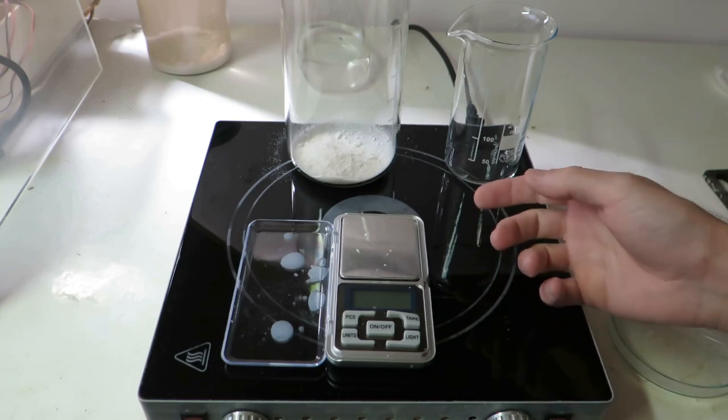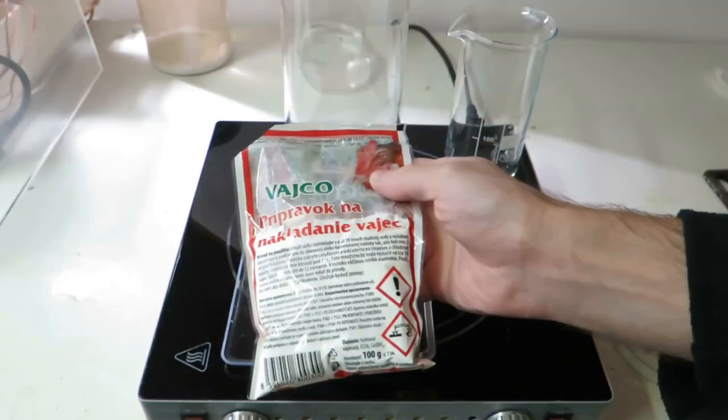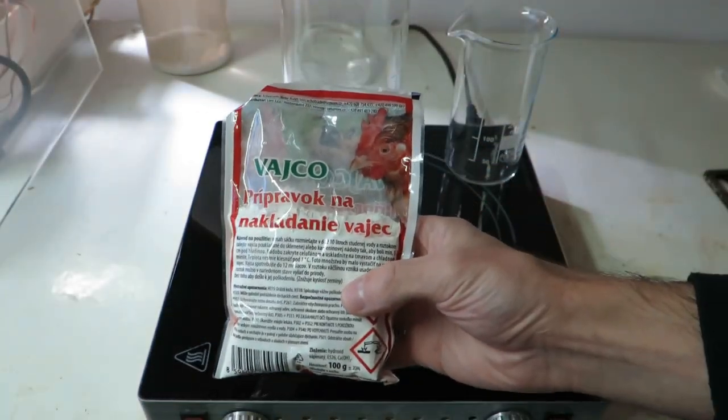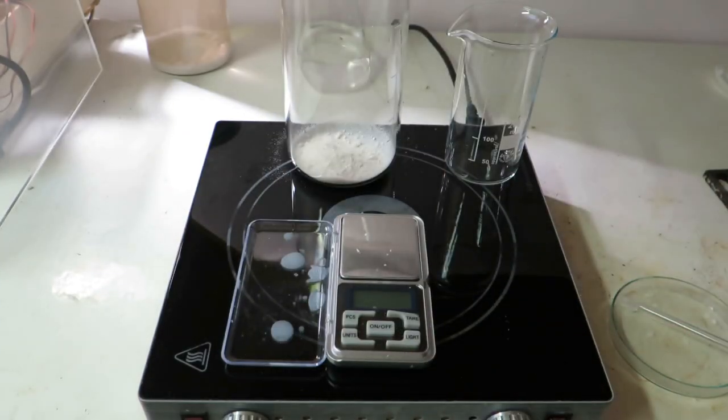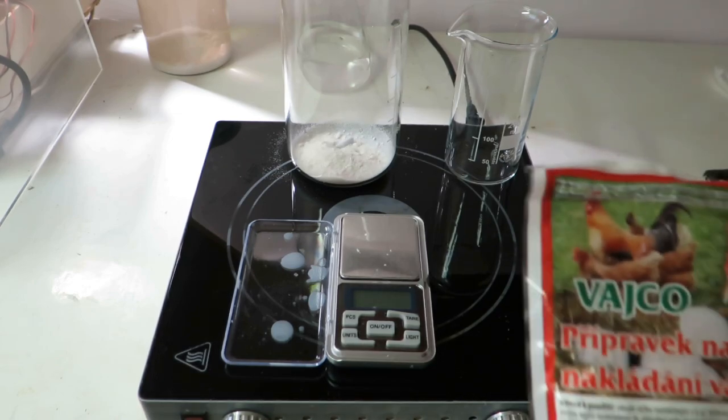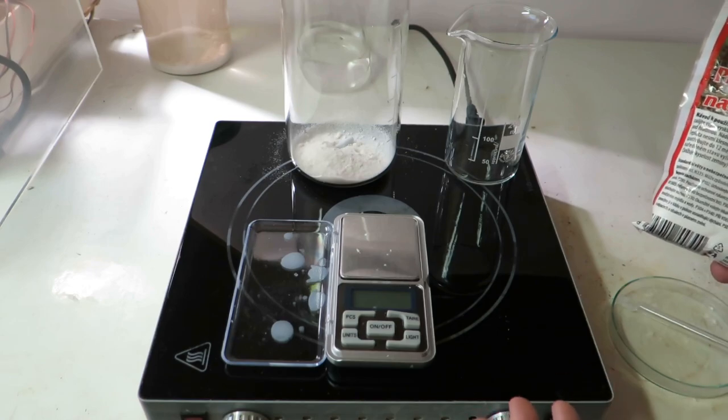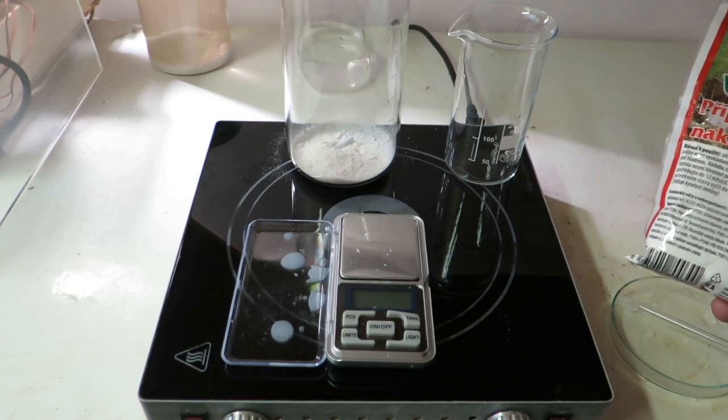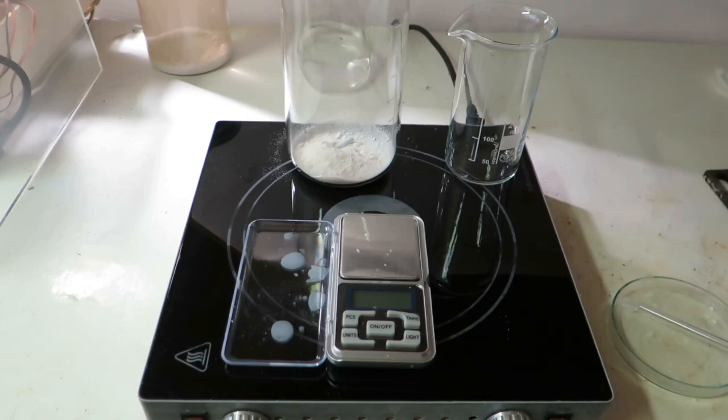So long story short, you neutralize this benzoic acid with calcium hydroxide. Oh by the way, here's calcium hydroxide, look at this packaging. Anyway, you neutralize benzoic acid with calcium hydroxide to form calcium benzoate and then you pyrolyze it to form calcium oxide and benzophenone, yeah.